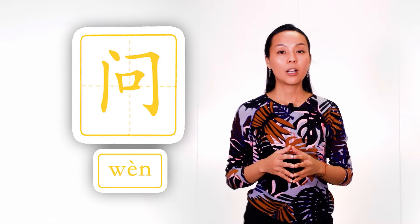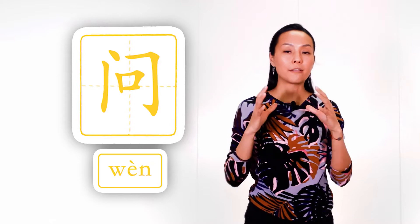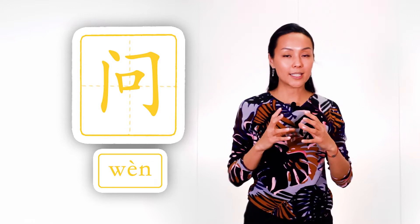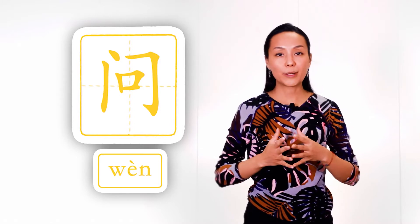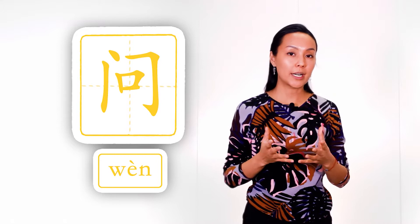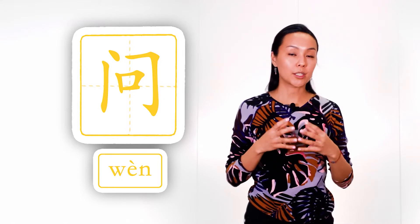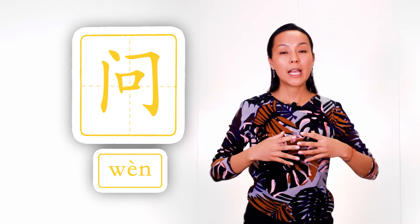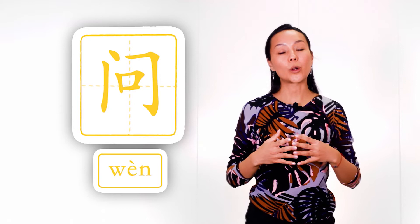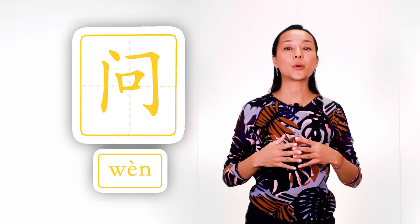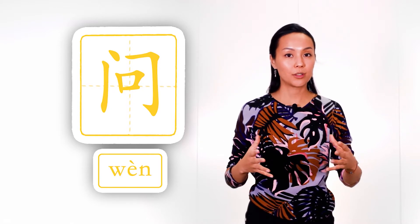Now let's study characters with this radical. The first character is 问 (wèn), meaning 'to ask.' We have a mouth inside the gates, and it's easy to memorize: when we open our mouth we ask questions, and in this way we can open any doors.